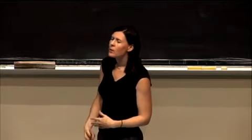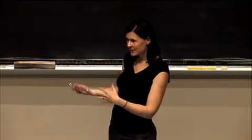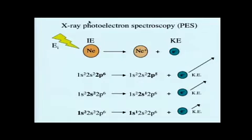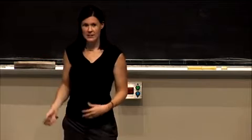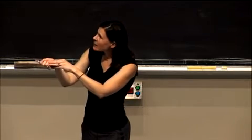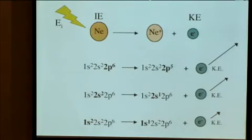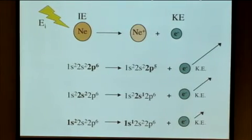There's actually one more orbital we could talk about for this sample case of neon, which is the 1s orbital. If we're talking about a 1s orbital, now we're going to be even lower in energy still, so the minimum energy required to eject an electron is going to be at its highest, which means the energy left over that turns into kinetic energy for the electron is now going to be really quite small.